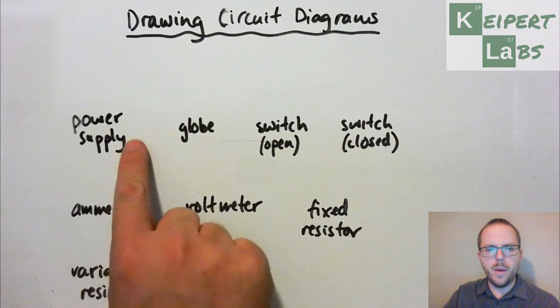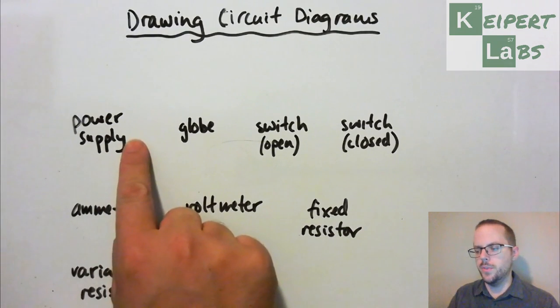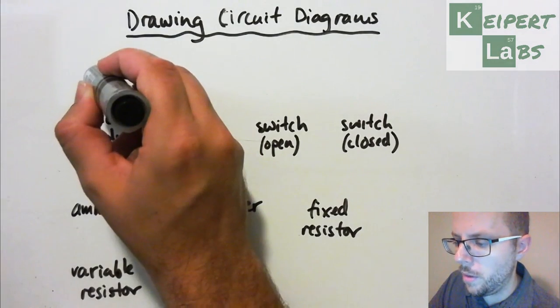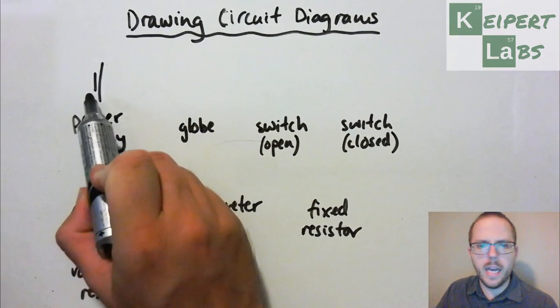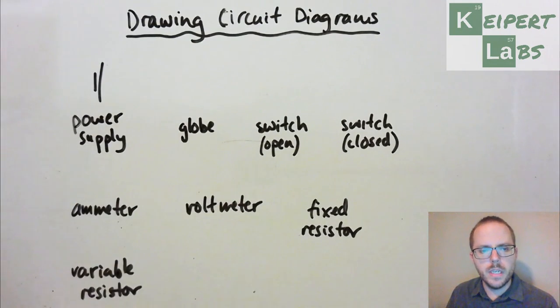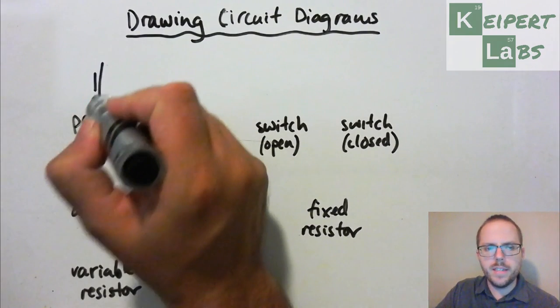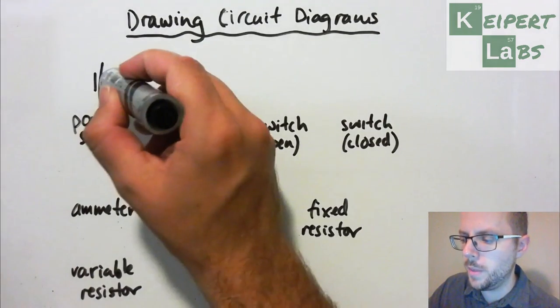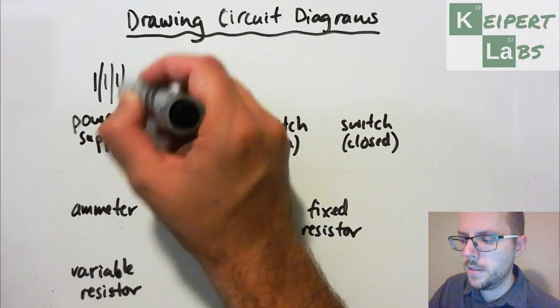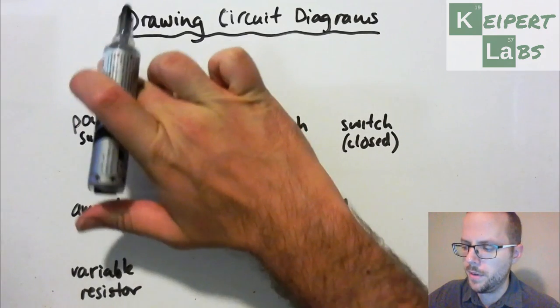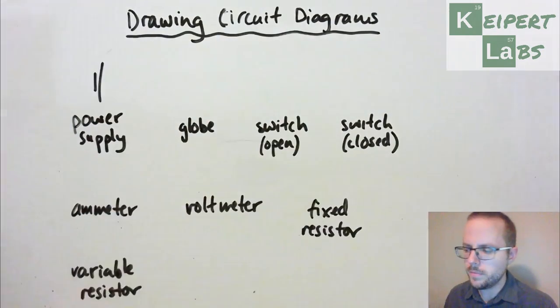So the power supply or the power source is where our source of energy comes from. And so we represent that with a combination of a short line and a long line, represented like this. And then depending on the size of our power supply or how that's arranged, we might have a couple of these in sequence. But the same sort of idea of long line and short line.